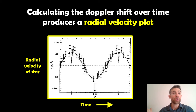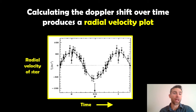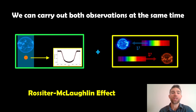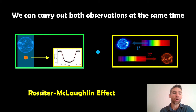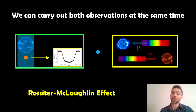The transit method gives us the actual radius of the planet because a bigger planet blocks out more light. The radial velocity or Doppler shift method gives us the mass — a more massive planet creates a bigger radial velocity of the star. So we can get mass and radius, but we can also work out the spin-orbit alignment of the system. What we're going to do now is carry out both at the same time. We do transit photometry and radial velocity simultaneously. We know when the transit is going to occur, so we measure the radial velocity of that star during the transit, which gives us really interesting information about the system.